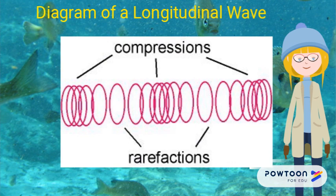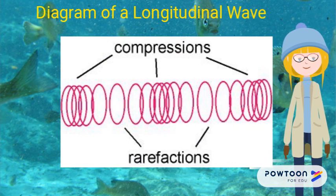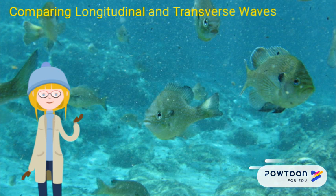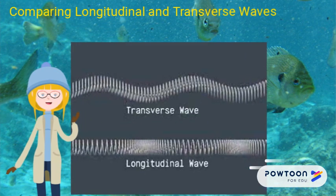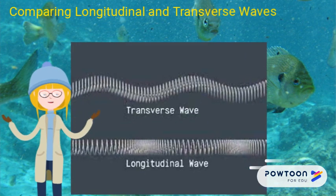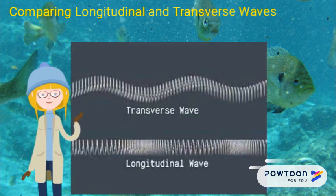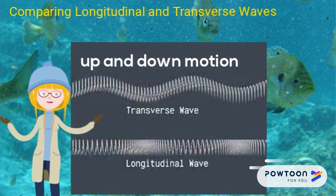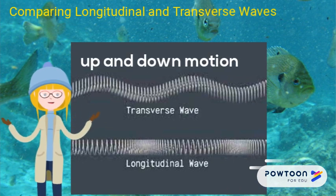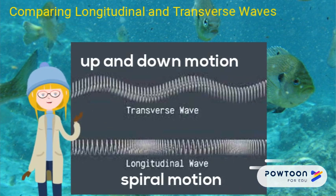Here is a diagram of a longitudinal wave for your notes. When comparing the two types of wave motion, the big difference is that transverse waves travel in an up and down motion, while longitudinal waves travel in a spiral motion.